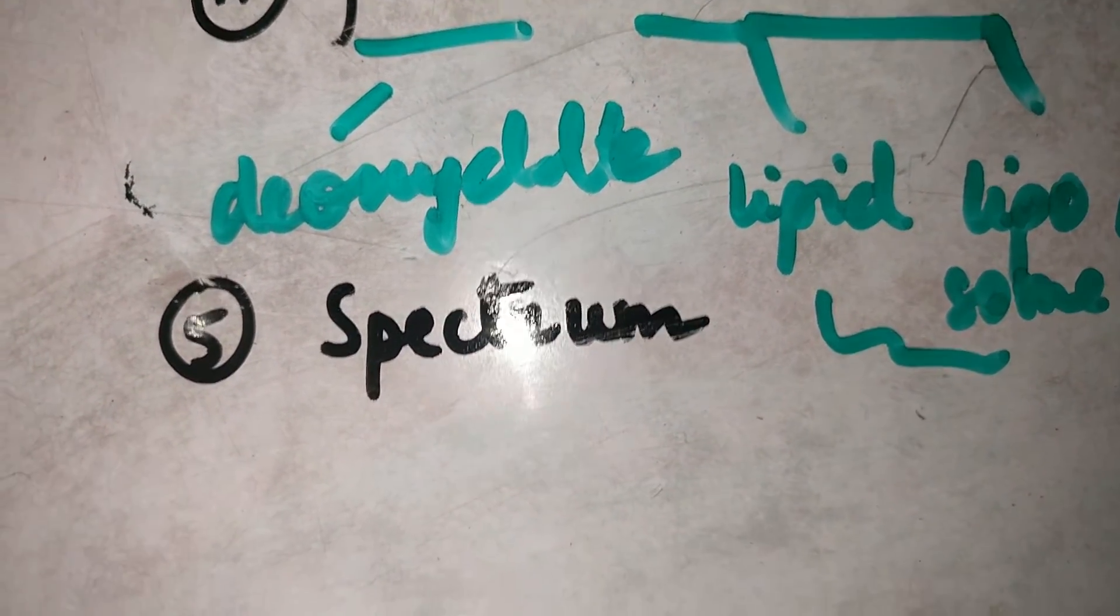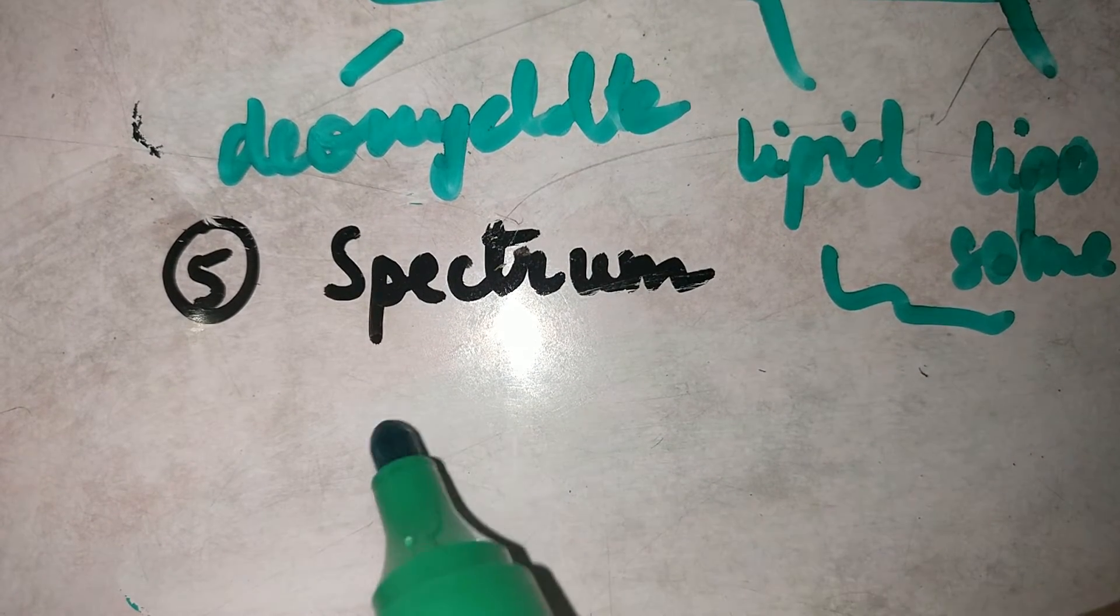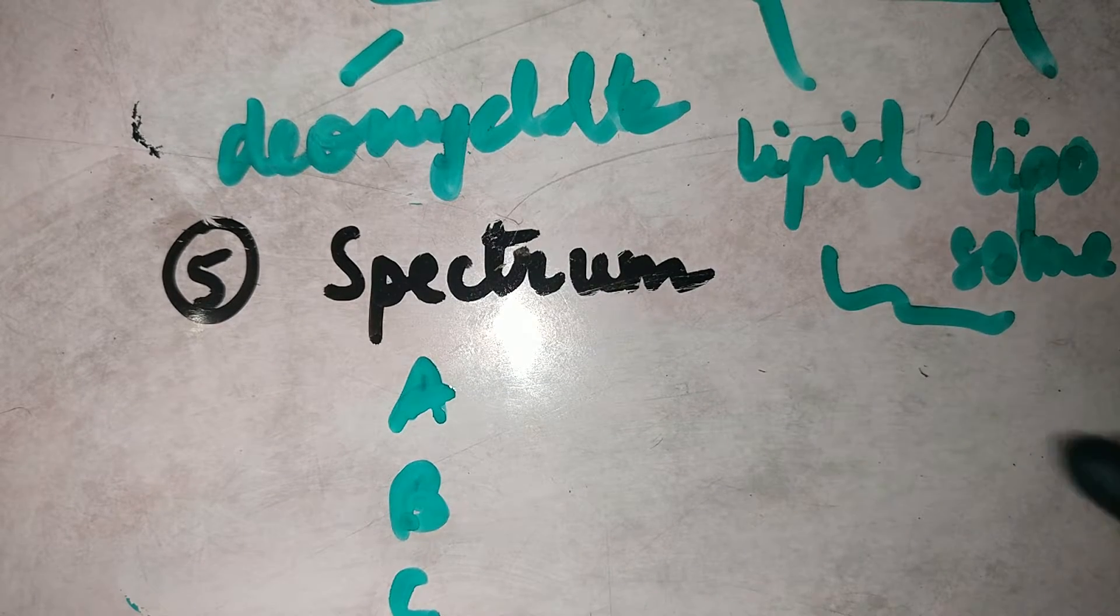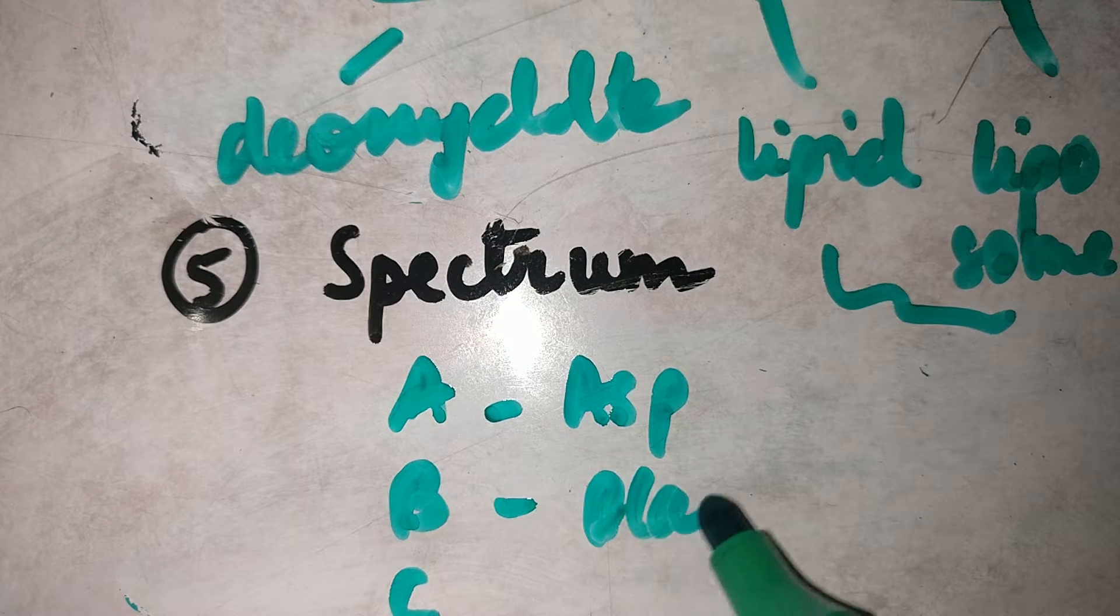Number five is the most important, the fungal spectrum of Amphotericin B. A simple way to remember this would be A, B, C, D. A stands for Aspergillus, B stands for Blastomyces.